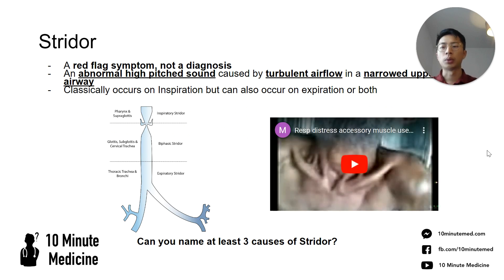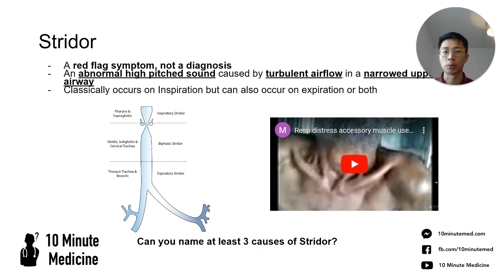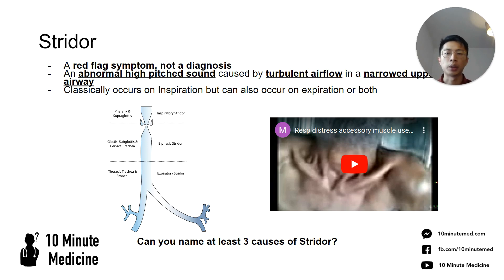So what is stridor? First of all, it's a red flag symptom — it's not a diagnosis — so anyone presenting with it needs an urgent review. It's caused by a narrowing of the upper airways, which creates an area of turbulent flow within the airway, and that's what gives us the classical sign of an abnormally high-pitched sound coming from the upper airway.